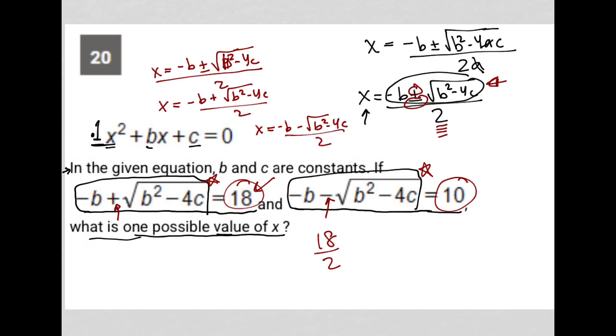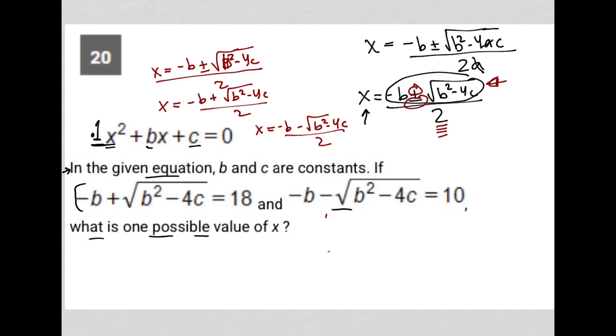The question tells us that -b + √(b² - 4c) = 18, so this is 18/2. And -b - √(b² - 4c) = 10, so this is 10/2.